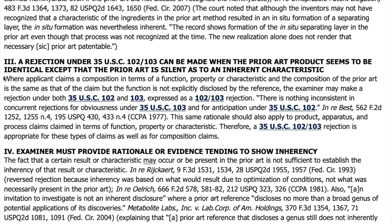Let's finish reading this part. The most relevant sentence states: where an applicant claims a composition in terms of a function, property, or characteristic, and the composition of the prior art is the same as that of the claim, but the function — which would be the special technical feature — is not explicitly disclosed by the reference, the examiner may make a rejection under both 35 USC 102 and 103. So you can see that the examiner can reject your claim even though the special technical feature is not disclosed.